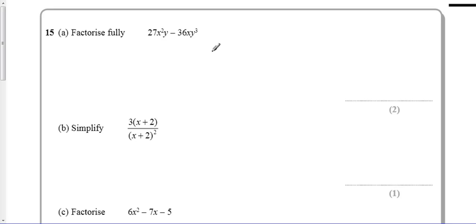Okay, so we've got this factorize problem which means we need to put it into brackets. I want to find the highest common factor of these two things, so the biggest number that goes into both is nine. There's an x squared and an x, so an x goes into both. There's a y and a y cubed, so a single y goes into both.